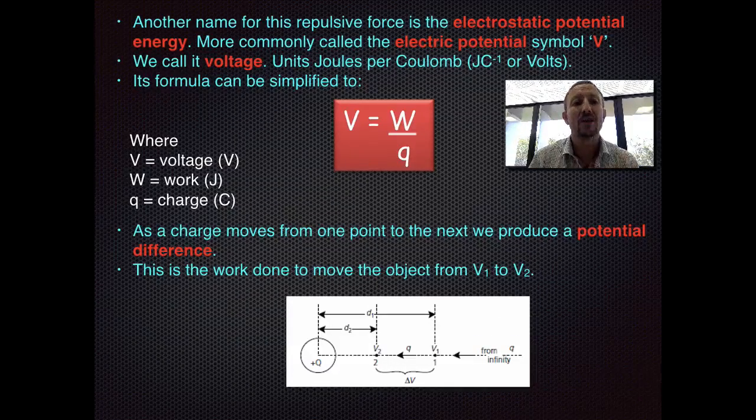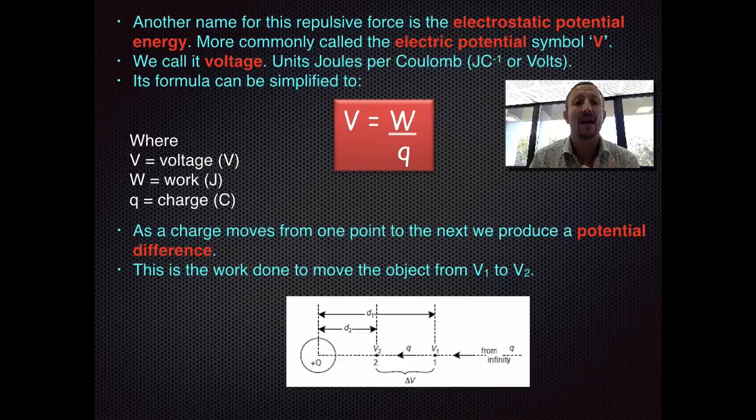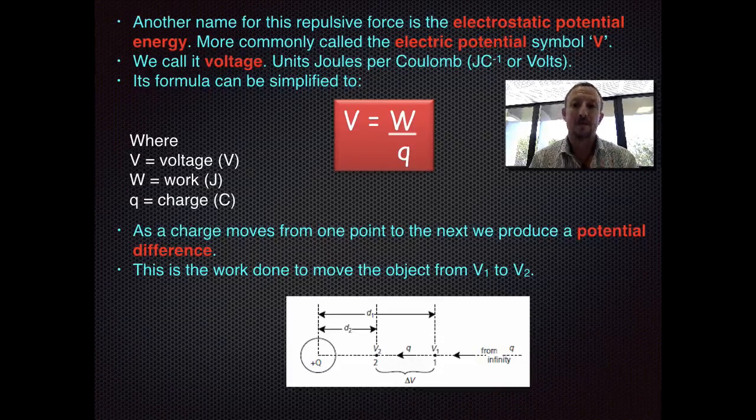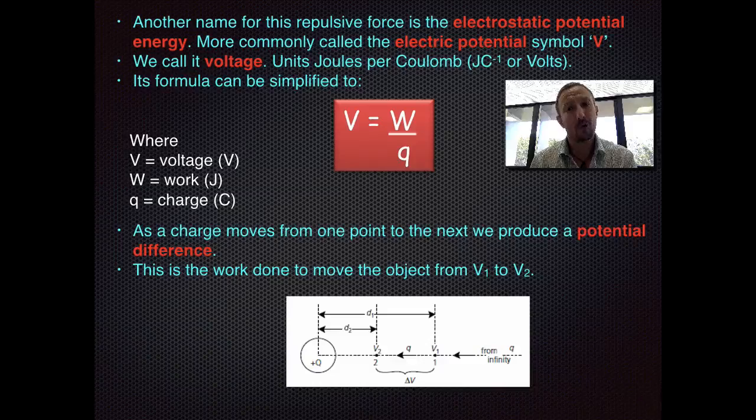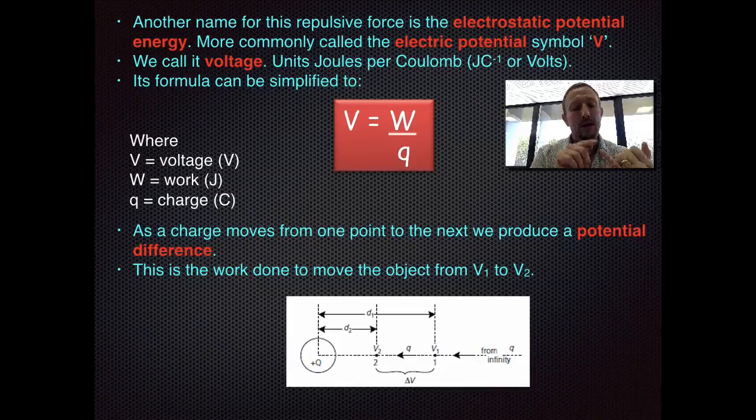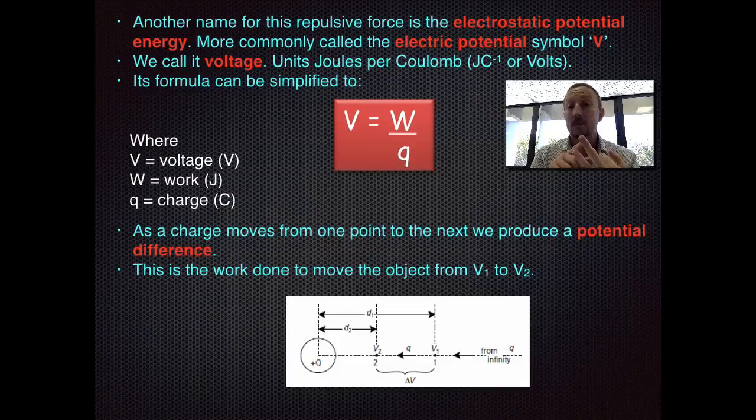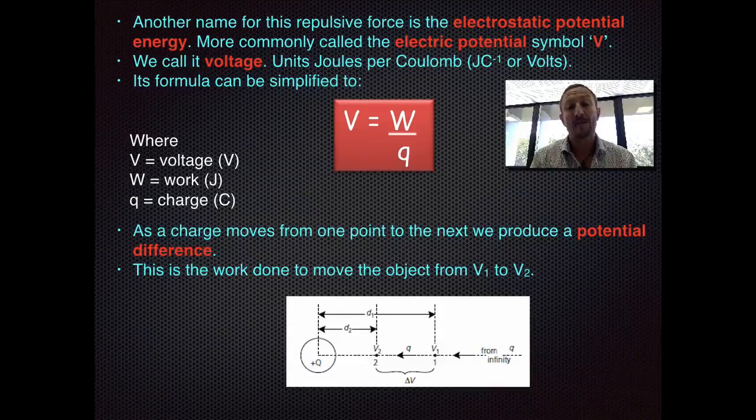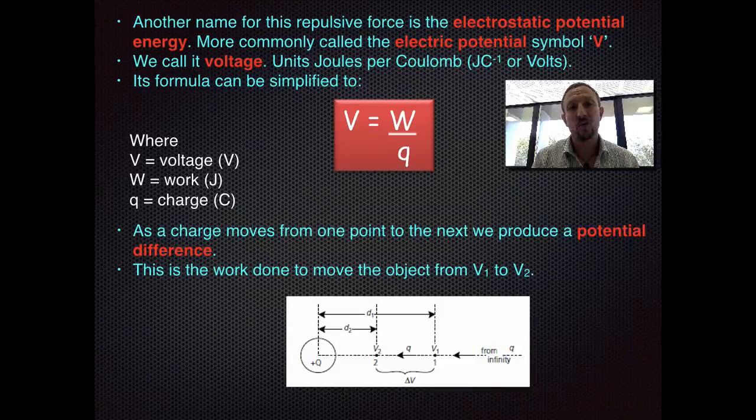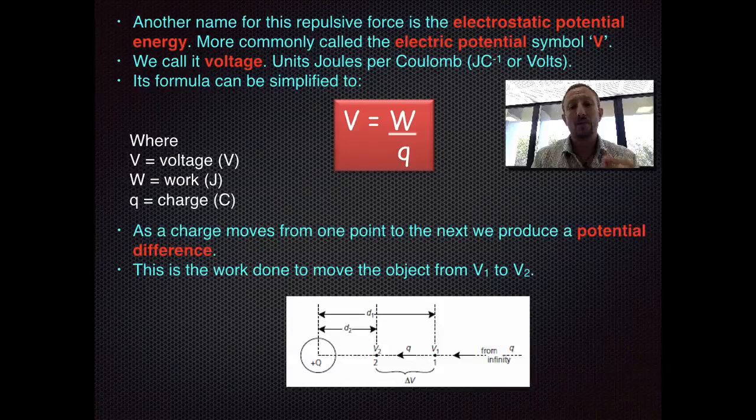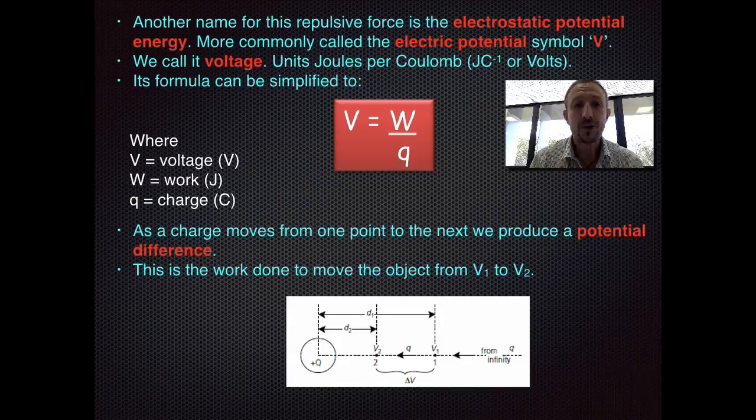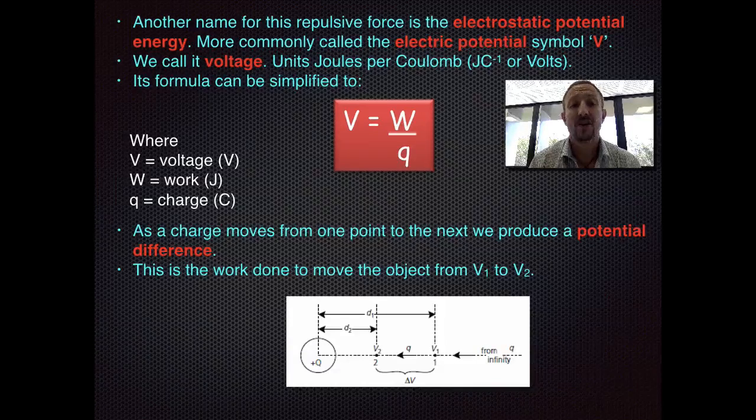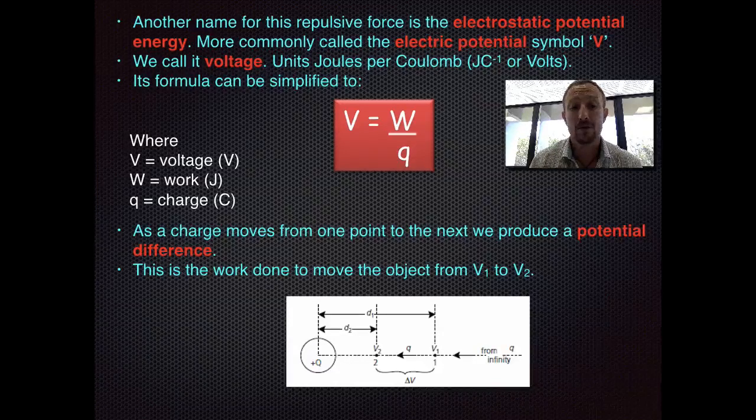Now basically voltage can be determined using the algorithm V equals work per coulomb. It's the amount of energy per coulomb. So remember work is Q times E times D so we could substitute that if we needed to, and as a result voltage will be that work divided by Q where voltage is V, work is joules, and Q is the charge in coulombs.